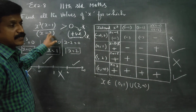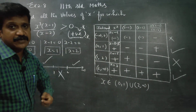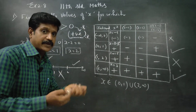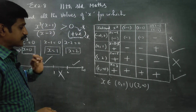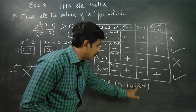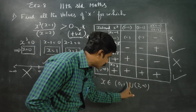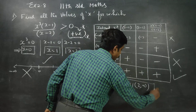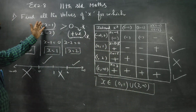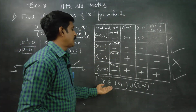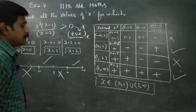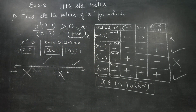Anything divided by zero — if you try to put it in a calculator, the calculator will give an error. All the intervals are open intervals. This is the solution: find all values of x. All values are between 0 to 1 and 2 to infinity. Thank you.